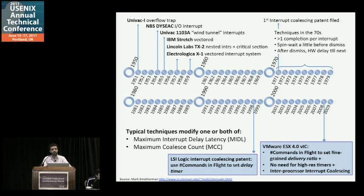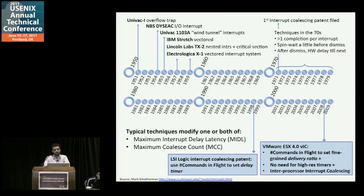We have the same intuition, but use it very differently. We use commands in flight to set fine-grained delivery ratios, whereas they work with delayed timers. As a result, our design does not need high-resolution timers. We also have several other unique aspects, including interprocessor interrupts and coalescing of those. I counted four Turing Award recipients who have contributed to interrupt processing: Edsger Dijkstra, John McCarthy, Fernando Corbato, and Butler Lampson. Talk about building on the shoulders of giants — definitely an experience in humility.